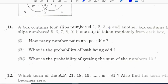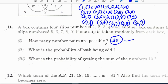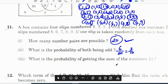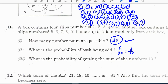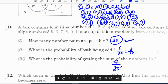Question 11: A box contains 4 slips numbered 1, 2, 3, 4 and another box contains 5 slips numbered 5, 6, 7, 8, 9. If one slip is taken randomly from each box, how many number pairs are possible? We have 20 pairs. What is the probability of both being odd? Checking odd numbers: (1,5), (1,7), (1,9), (3,5), (3,7), (3,9) - that's 6 pairs. The answer is 6/20 or 3/10. What is the probability of getting sum of numbers 10? We have 1+9=10, 2+8=10, 3+7=10, 4+6=10. Totally 4 favorable outcomes out of 20, so answer is 1/5.